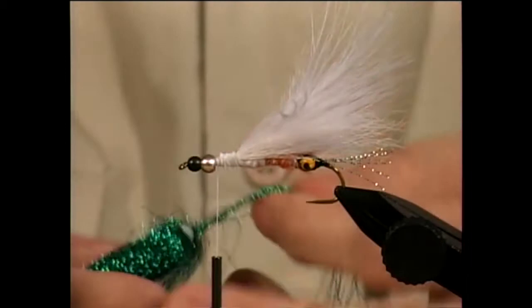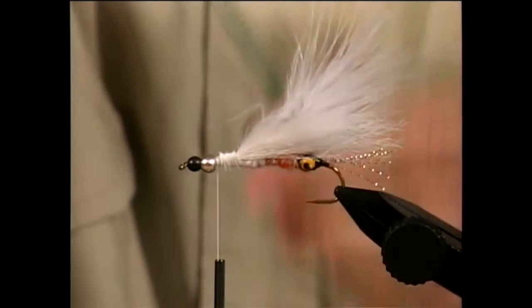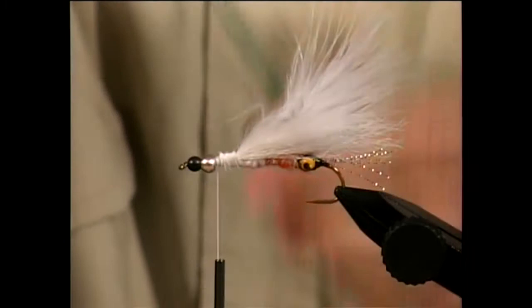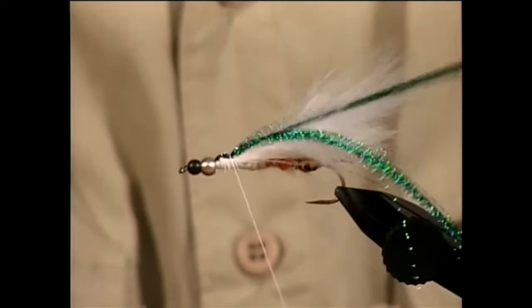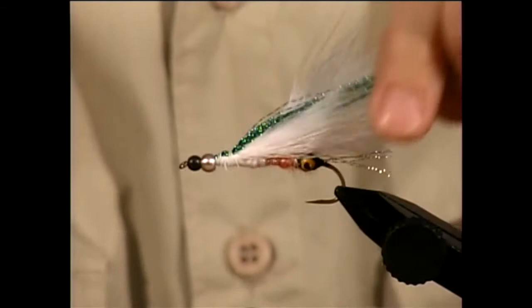Okay, the next thing I want to do is put in a topping. And the topping is going to be green crystal flash. We want a nice bunch of green crystal flash. I haven't really counted the fibers. There should be 20 to 30 strands. I'll tie it in, fold it over, and make a double layer so it's nice and thick. And I'll trim it to length to give me the topping on the fly.